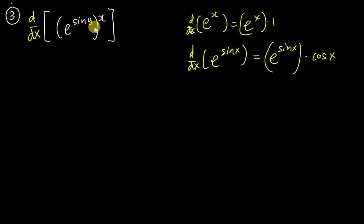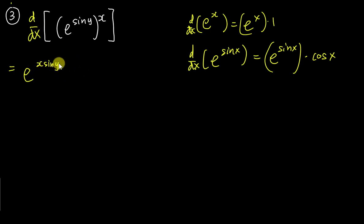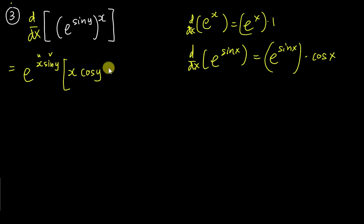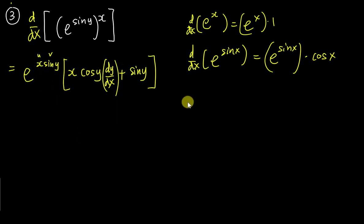This question is a bit different because the power involves y, not just x, so we must be very careful. For the exponent, copy the power — so we have e^(x sin y). Now differentiate the power using the product rule: u is x, v is sin y. Copy x and differentiate sin y, giving cos y·(dy/dx). Plus copy sin y and differentiate x, which gives 1 — so just sin y. The final answer is e^(x sin y)·(x·cos y·(dy/dx) + sin y).